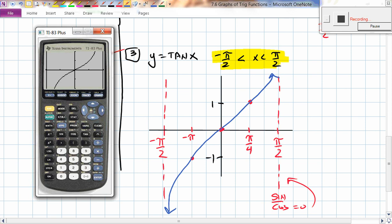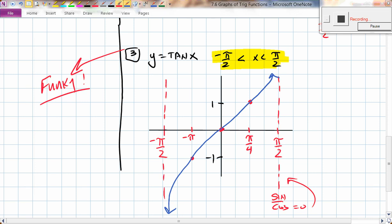So, the cool thing about the tangent function is it's always increasing. This should be π/4. It's funky. Super funky.